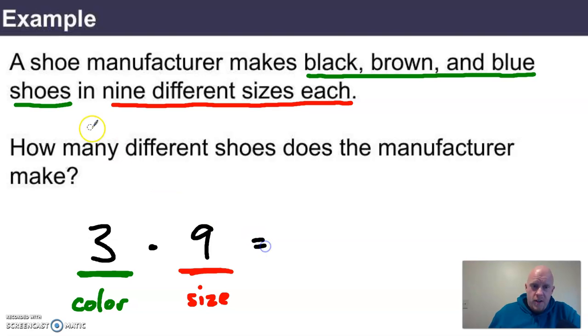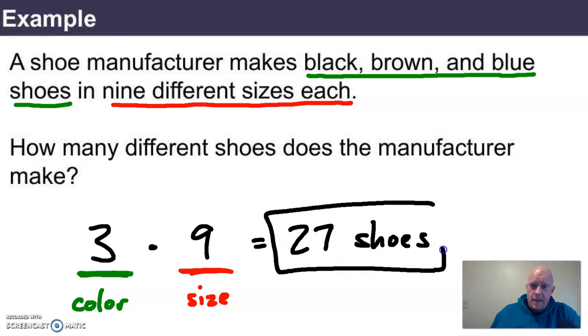So the answer to the question, how many different shoes does the manufacturer make? 27 shoes. 27 different shoes. Each of those nine sizes can be made in black, brown, or blue.